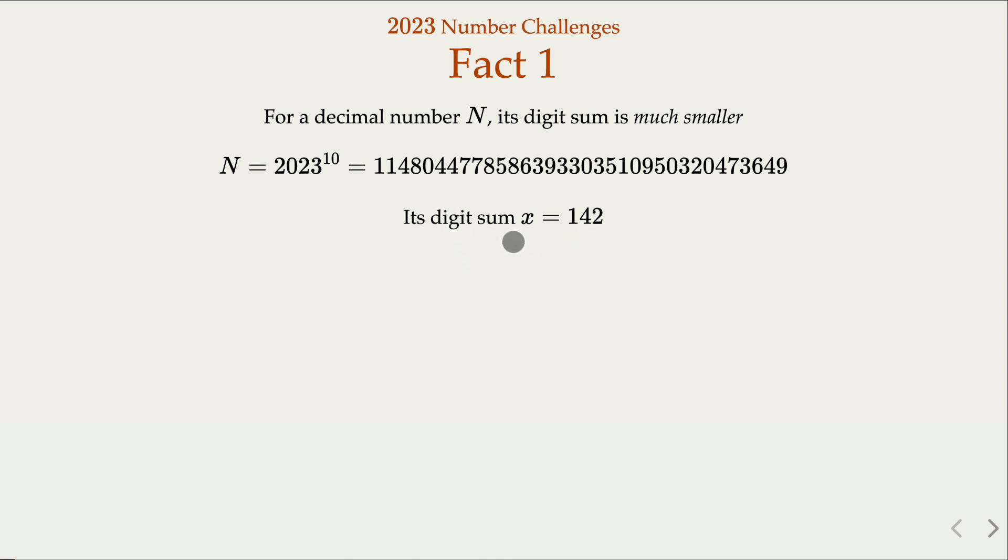So how are the two related? Imagine if you have k digits, and since each digit is at most 9, from 0 to 9, the digit sum is at most 9 times k. Now in this case n = 2023^10 has 34 digits. So the digit sum x must be bounded above by 9 times 34, that is, it cannot be more than 306. Indeed we have 142 is smaller than 306. This is some basic fact about the digit sum of big numbers.